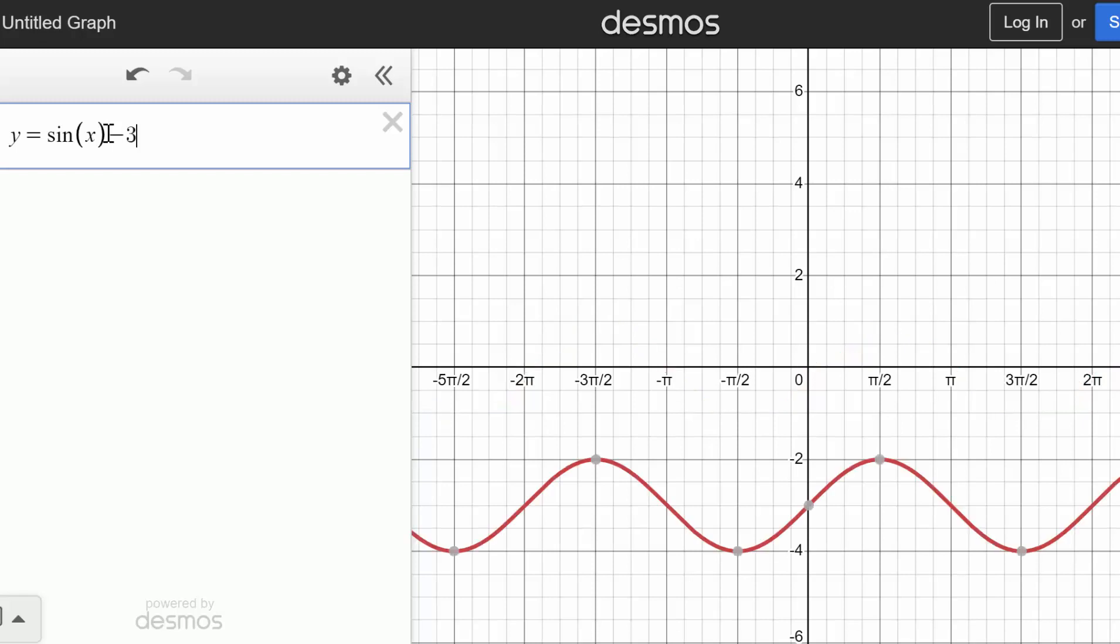So if we subtract three from the sine function, it shifts it down three. If we add four to the sine function, it shifts everything up four units. And in the next video, we will look at specific examples where we're given the equation of our sinusoidal function and we need to determine the midline value, though it's essentially going to be whatever we are adding or subtracting to the outside of the function.